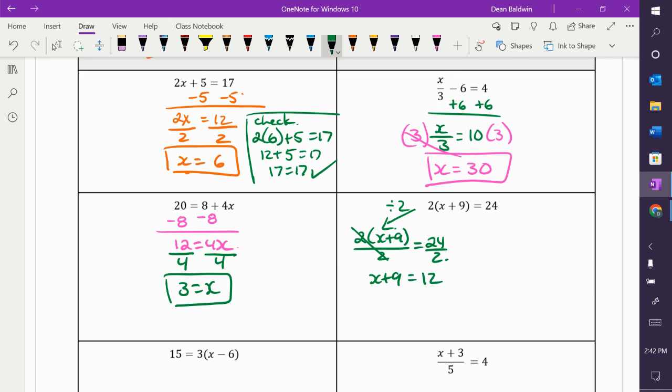Now, I have this expression. X plus nine is equal to 12. How do I get rid of the nine? Subtract nine. Cade. What's 12 minus nine? Three. X is equal to three.